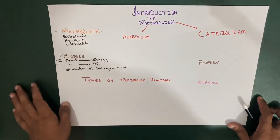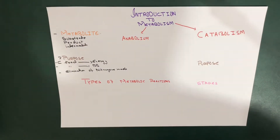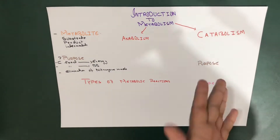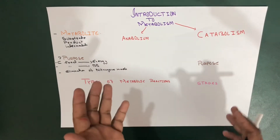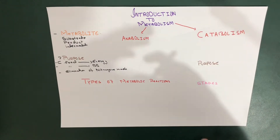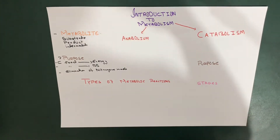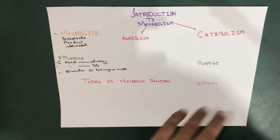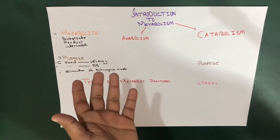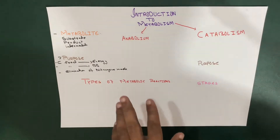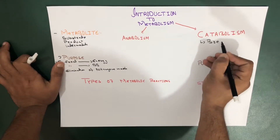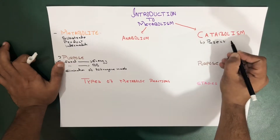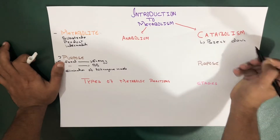Now let's move towards catabolism. Catabolism is a set of metabolic pathways that break down molecules into smaller units. As I've mentioned, catabolism means breaking down — you break down molecules into smaller units that are either oxidized to release energy or used in other anabolic reactions. Simply put, catabolism is the breakdown of food or any biomolecule.